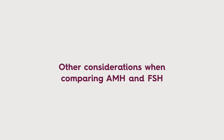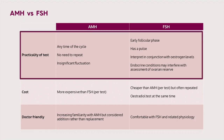Turning to practicalities: AMH can be done at any time of the cycle because there is no significant variation in the test across the menstrual cycle — any time of the month is good enough. That is very practical compared to having to wait for the second, third, or fourth day of the cycle for FSH. This is an obvious advantage of AMH.